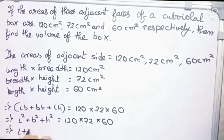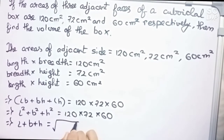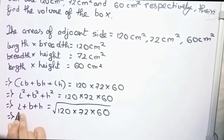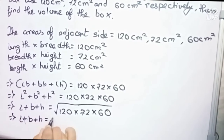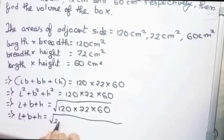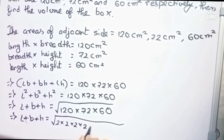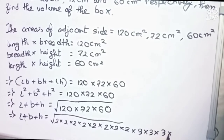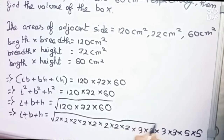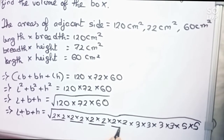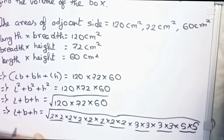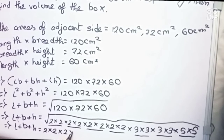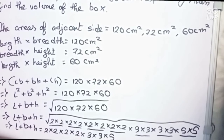So the volume lbh equals the square root of 120 into 72 into 60. After prime factorizing this number, it becomes 2 into 2 into 2 into 2 into 2 into 2 into 3 into 3 into 5, and taking the square root gives us the final value.